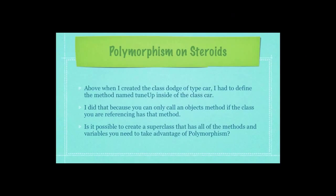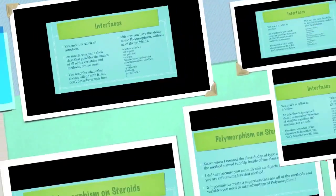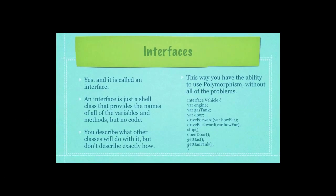When I created the class Dodge of type Car, I had to define the method named TuneUp inside of the class Car, because you can only call an object's method if the class you're referencing has that method. But it is possible to create a superclass that has all of the methods and variables you need to take advantage of polymorphism — and it is called an interface. An interface is just a shell class that provides the names of all of the variables and methods, but no code. You describe what other classes will do with it, but don't describe exactly how.